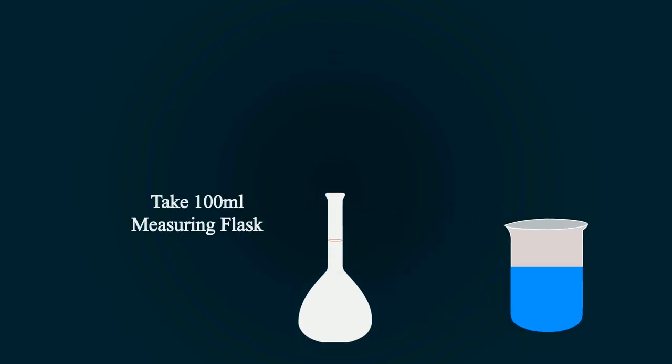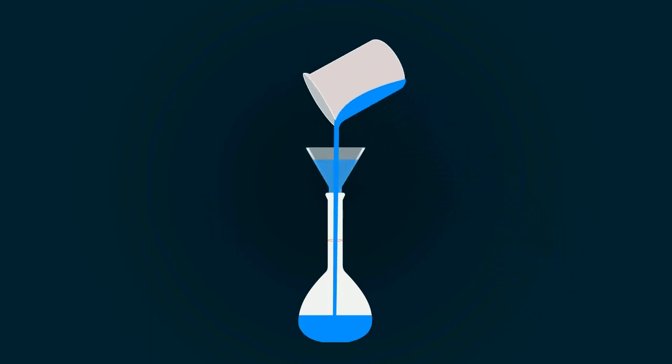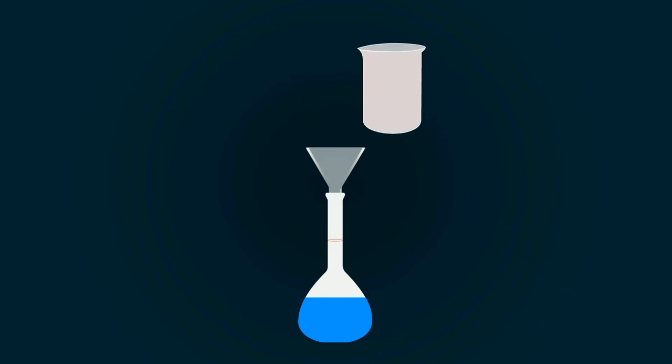Now take a measuring flask of 100ml and put a funnel on the top. Now start pouring the solution into the volumetric flask. You have to fill it up to the 100ml point.